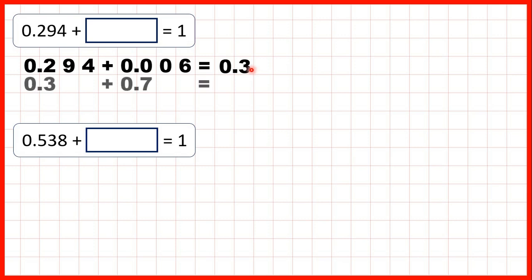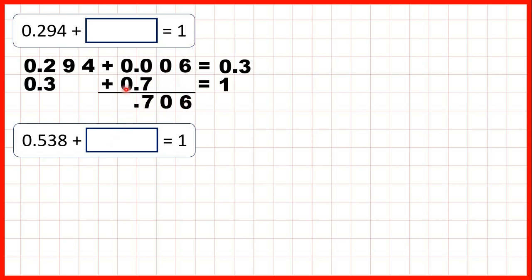Now from 0.3, if we add 0.7, that gives us 1.0, which is the same as 1 whole. So we added 6 thousandths, no hundredths, 7 tenths, and obviously no ones — so we added 0.706 to get to 1. That's our missing number.